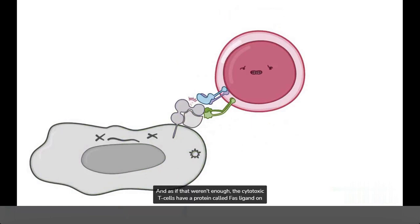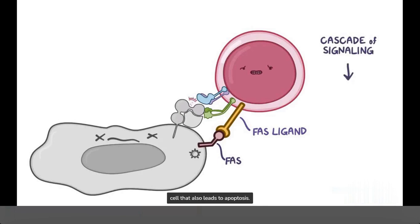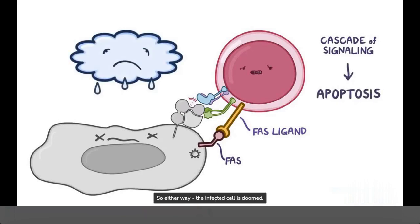And as if that weren't enough, the cytotoxic T cells have a protein called Fas ligand on their surface. Fas ligand binds to a protein called Fas on the surface of the infected cells, and when those two combine, it triggers a cascade of signaling events inside the target cell that also leads to apoptosis. So either way, the infected cell is doomed.